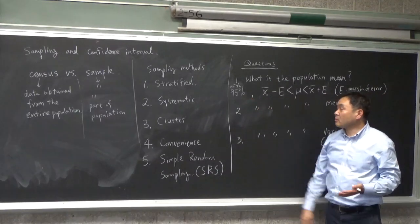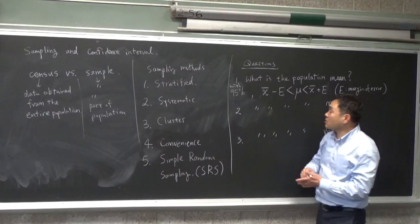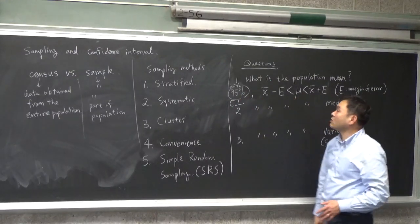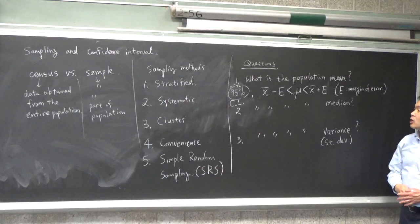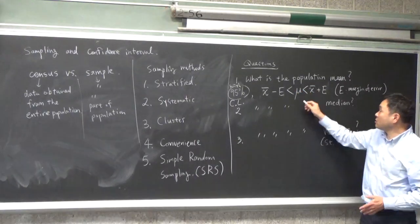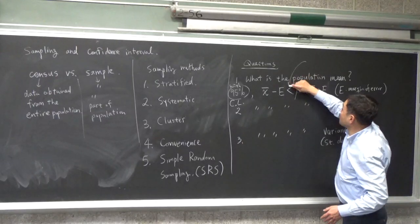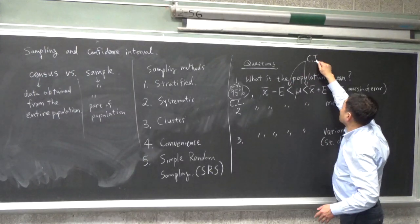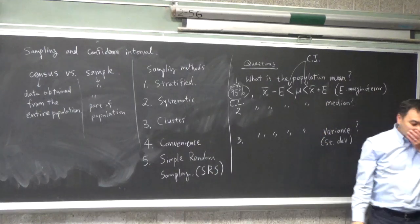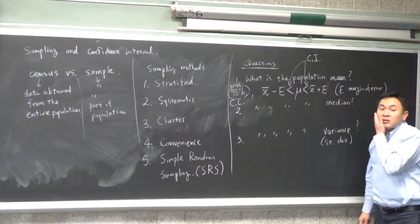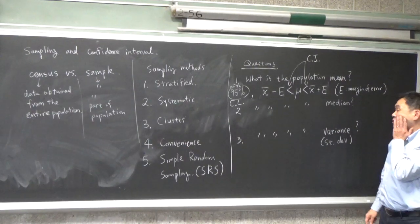So you have a confidence level (CL) associated with the confidence interval (CI). That's what you can do for the population mean.